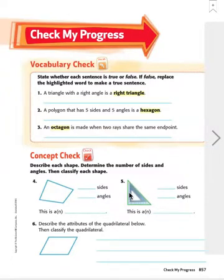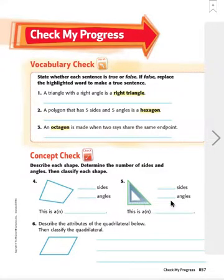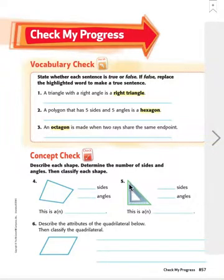Let's look at the next one. How many sides does this have? Three sides and three angles — this is a triangle. T-R-I-A-N-G-L-E. By the way, this is a right triangle because it has a right angle. A perfect corner is a right angle, so this is a right triangle.